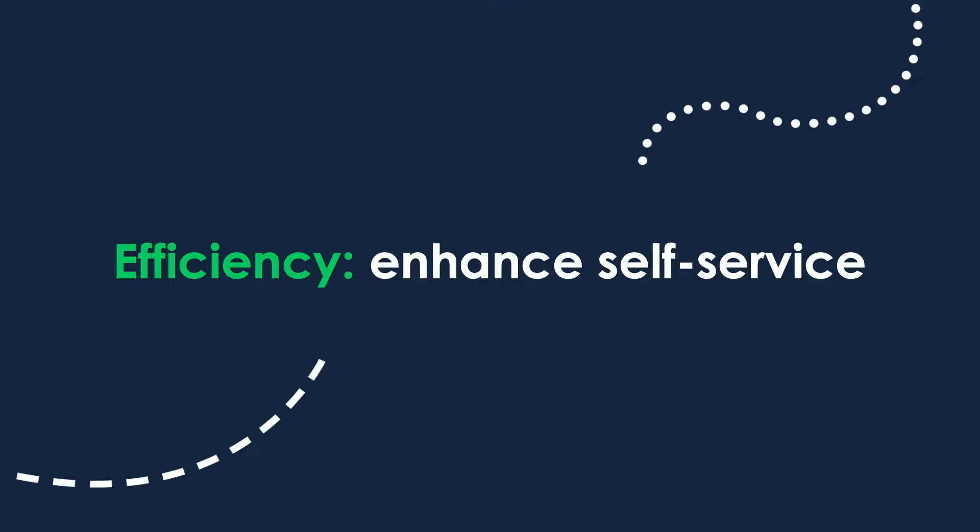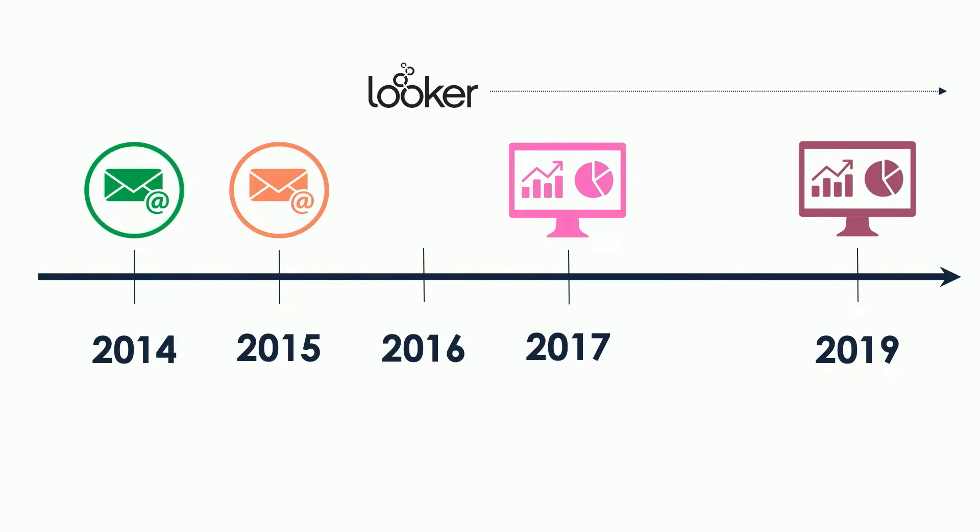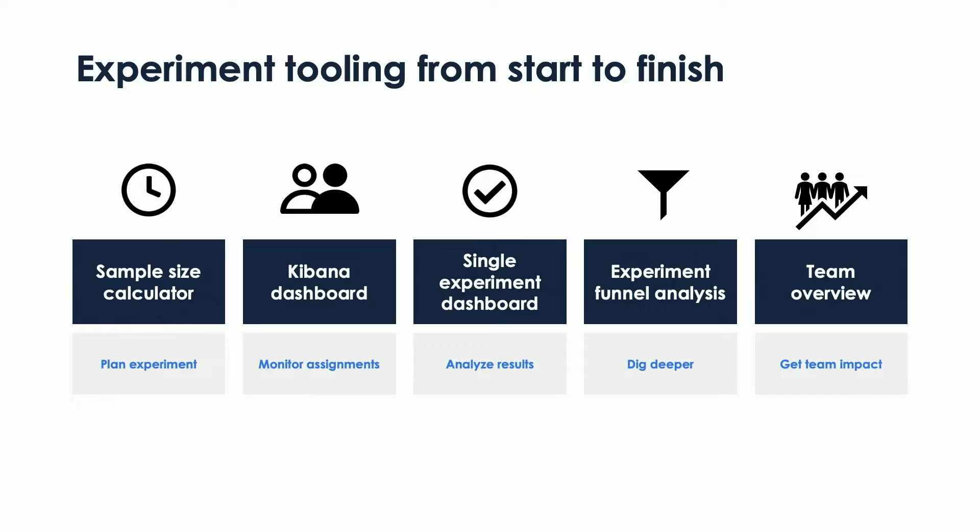Once we solved the problem with reliability, we wanted to increase efficiency, and there was only one way to move forward: enhanced self-service. This is where we put Looker to work, because in 2019 we launched two new dashboards — V2 and V3 of the same dashboard. We also realized that a single experiment dashboard is not enough, because teams have lots of questions both before and after launching an experiment. That's why we built a whole suite of tools to support teams from start to finish.